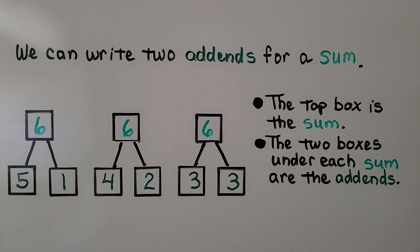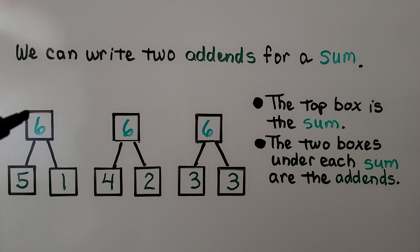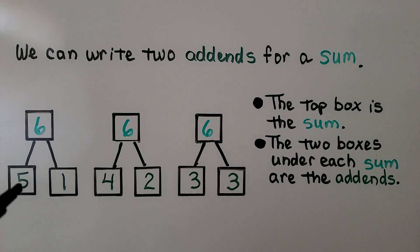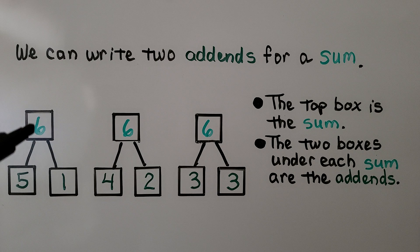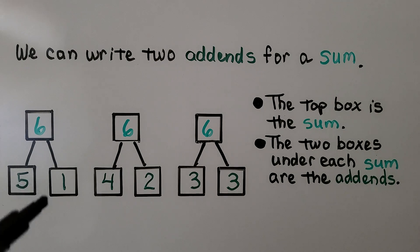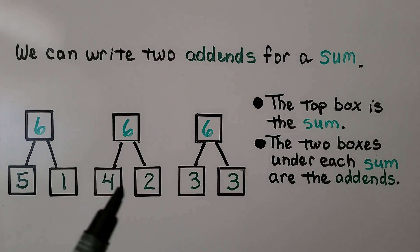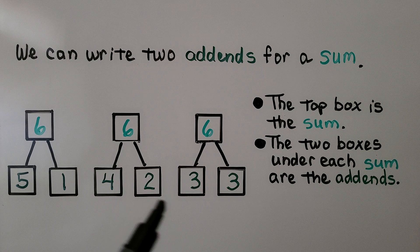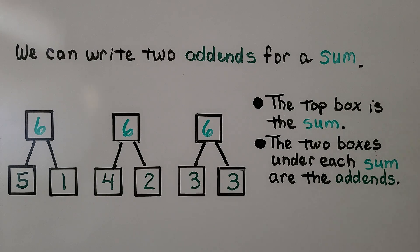We can write two addends for a sum. The top box is the sum, and the two boxes under each sum are the addends. So 6 is the sum, and the addends are 5 and 1. If 6 is the sum, the addends can be 4 and 2, or they could be 3 and 3.